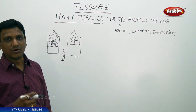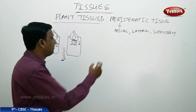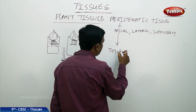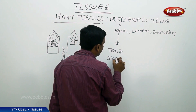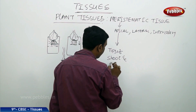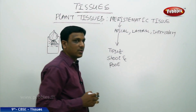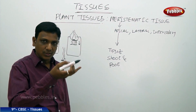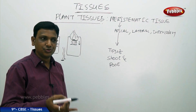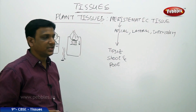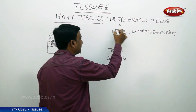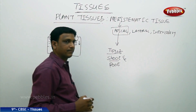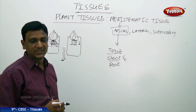Meristematic tissue is found in different parts of the plant. The apical meristem is found in the tips of the root and shoot. It helps in increasing the length of the plant — roots grow lengthwise and the shoot grows lengthwise — and this growth is achieved by the apical meristem.